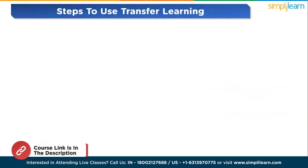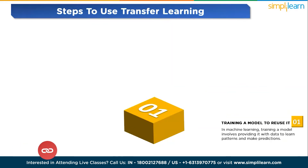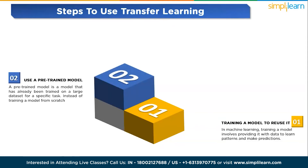Now let's see the steps to use transfer learning. The first step is training a model to reuse it. Training a model involves providing it with data to learn patterns and make predictions. Once trained on a specific task, it can be reused and repurposed for related tasks, saving time and computational resources. The second step is using a pre-trained model — a model already trained on a large dataset. Using it as a starting point allows us to benefit from the knowledge it gained during previous training.